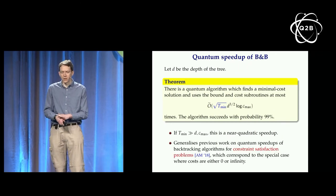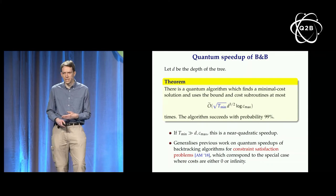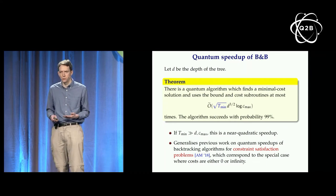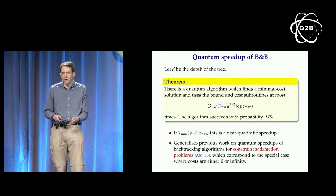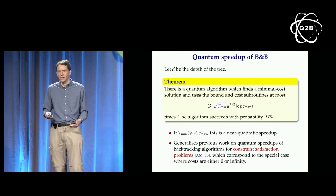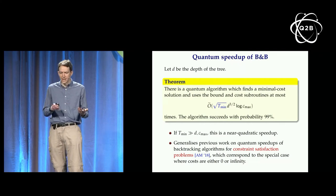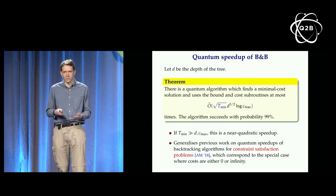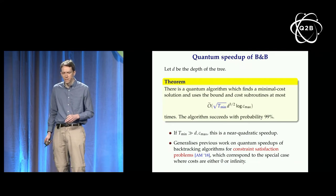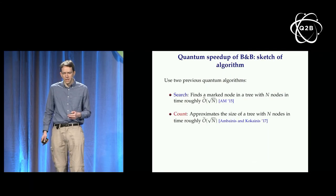This is a generalization of previous work applying quantum walks to solve constraint satisfaction problems using backtracking. Backtracking is very similar to branch and bound but applied to finding a solution satisfying constraints rather than minimizing cost. It's actually a special case of branch and bound, and that work also achieved a square root improvement, roughly speaking, up to some lower-order terms. This result generalizes that.